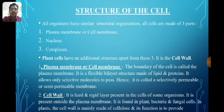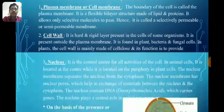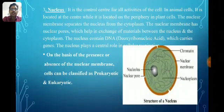The cell wall is a hard and rigid layer present in the cells of some organisms like plants and bacteria. It is present outside the plasma membrane. In plants, the cell wall is made up of cellulose and it is a dead structure. Its function in plants is to provide strength and rigidity, as plants have no bones or hard structures.